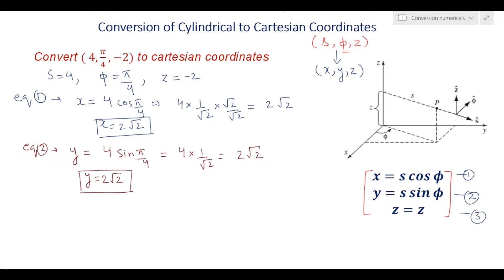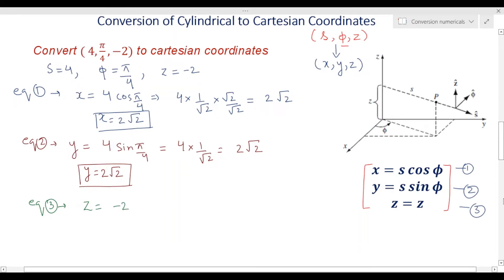And z will remain the same. In cylindrical coordinates, z is z only, that is -2. Now you can summarize your result. In Cartesian coordinate system you have converted the coordinates from cylindrical to Cartesian. How you will quote your answer: you will write it as x, y, and z. The x coordinate is 2√2, the y coordinate is also 2√2, and your z coordinate is -2. This is your conversion of cylindrical to Cartesian coordinates.